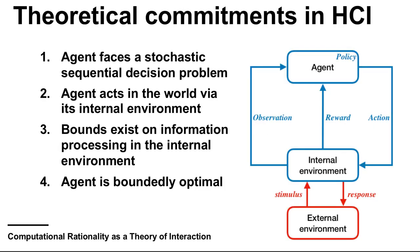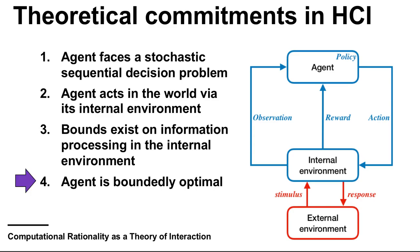The theory makes four key commitments. First, the user faces a decision problem that is stochastic and sequential — it must pick actions that maximize future rewards, but under partial observability of a stochastic world. Second, it does not have access to hard external reality, but only to its own cognitive states. Third, these states are limited by the bounds of human cognition — capacity limitations, noise, and uncertainty. Fourth, the agent's behavior over time approximates a policy that is optimized within those bounds.